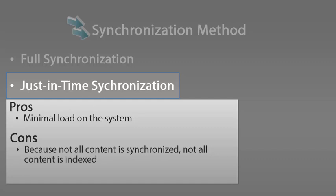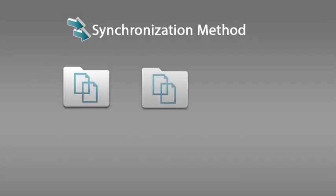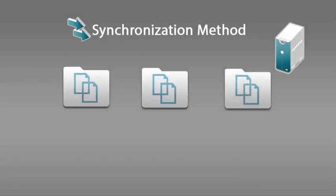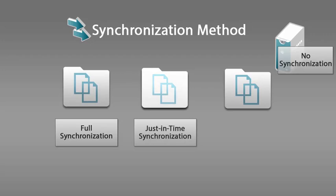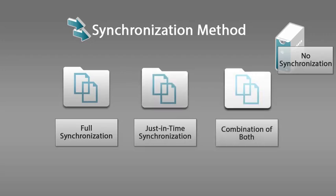However, with just-in-time synchronization it is unlikely that all content will be synchronized, and only the synchronized content will be indexed. Suppose you have three netfolders associated with a single netfolder server — the synchronization method does not have to be the same for each netfolder. It might make sense to not synchronize the netfolder server, and implement full synchronization on one netfolder, just-in-time synchronization on another, and perhaps both methods simultaneously for another.